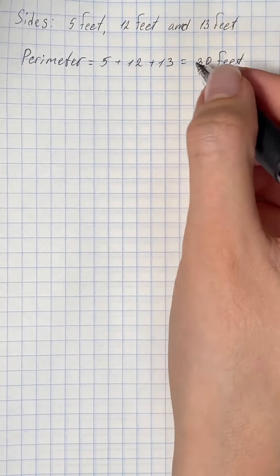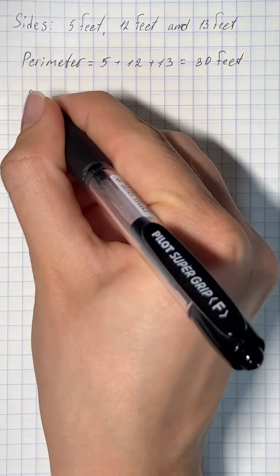And the base of triangular mainsail is given as 5 feet.